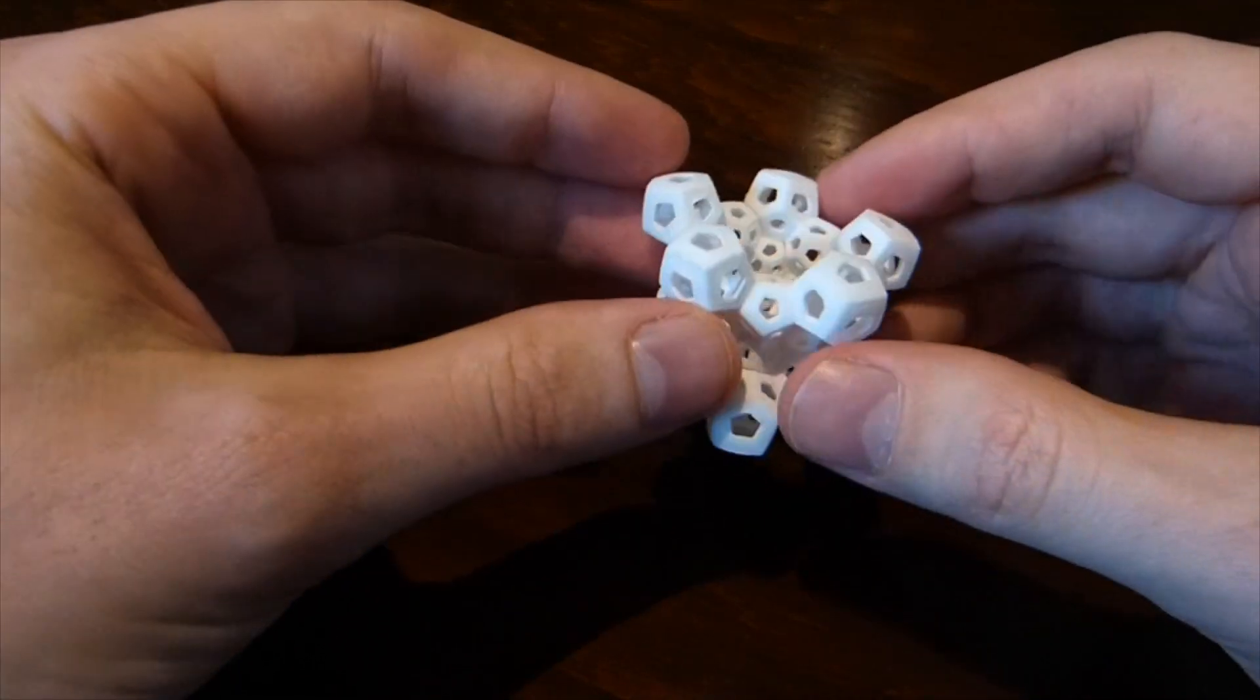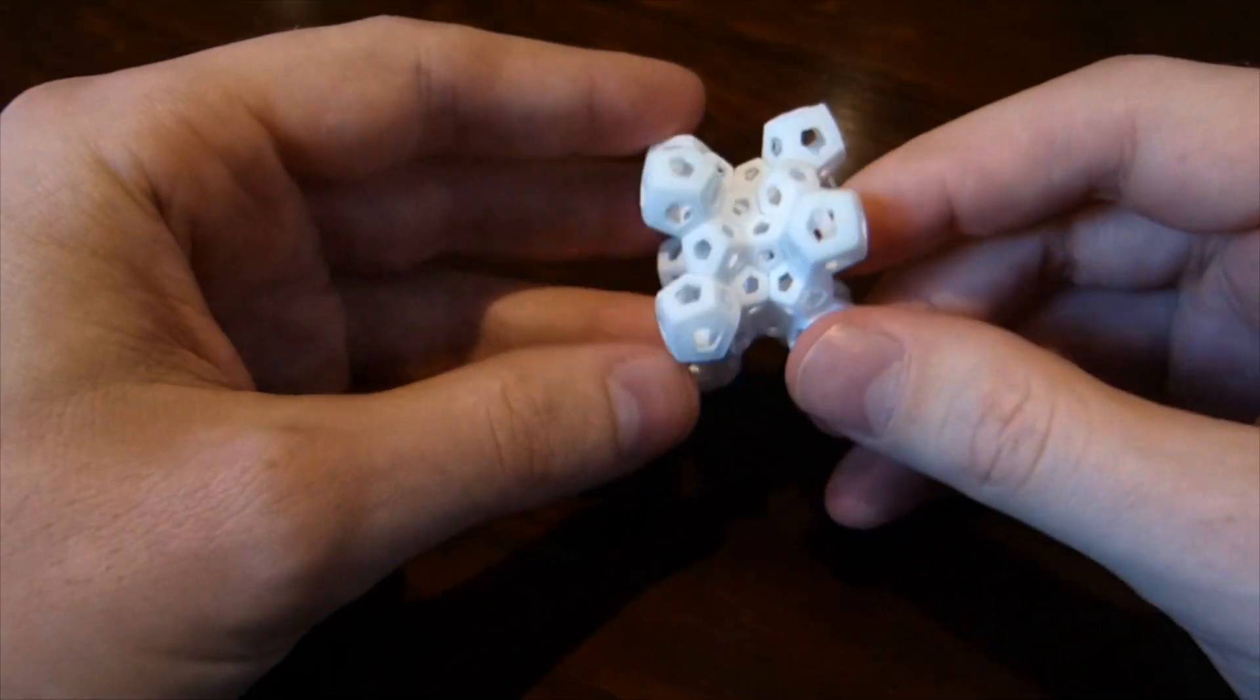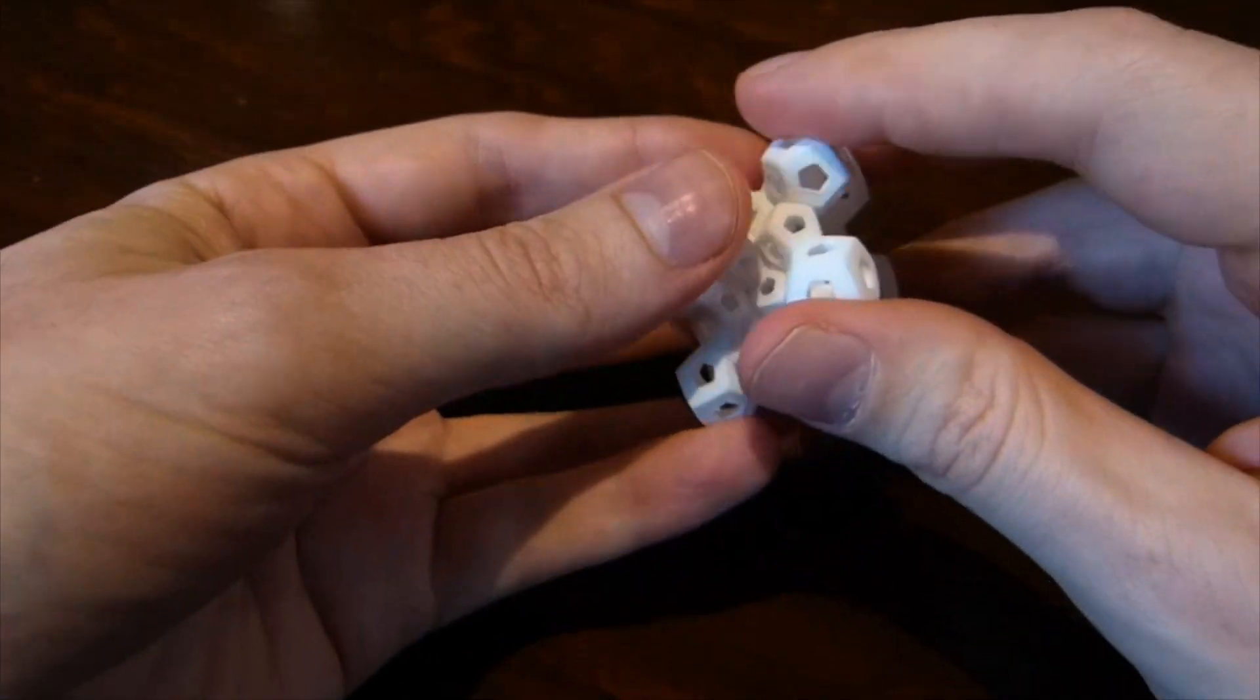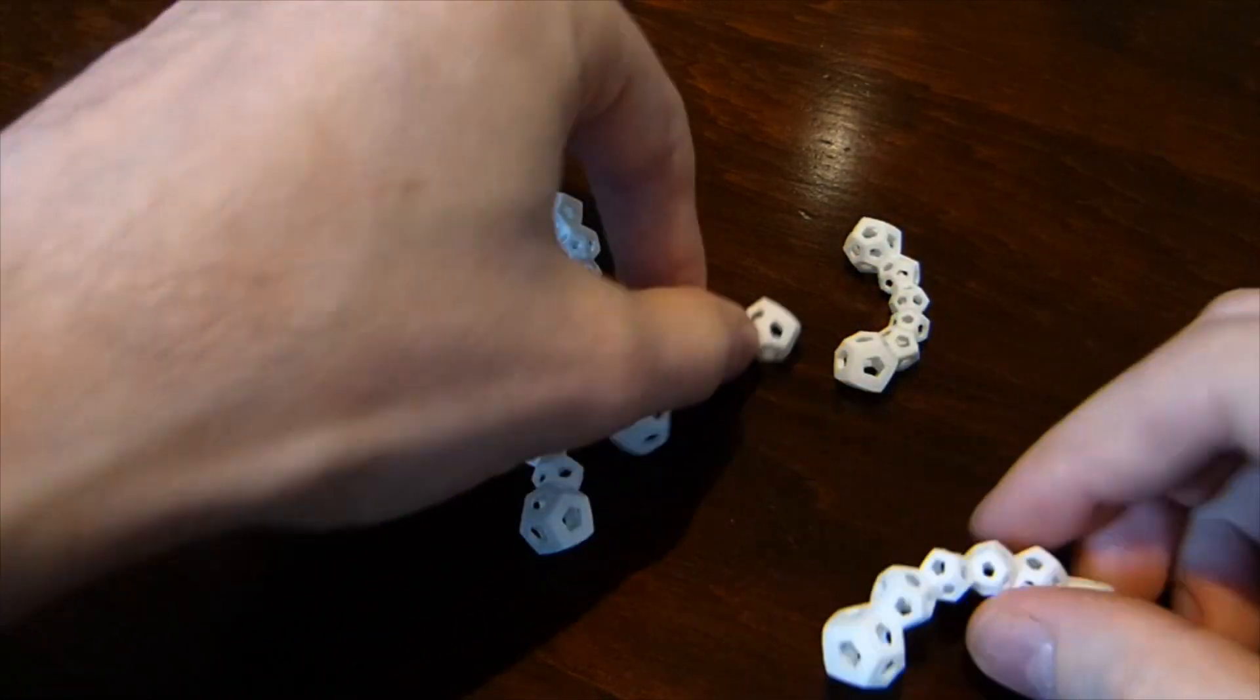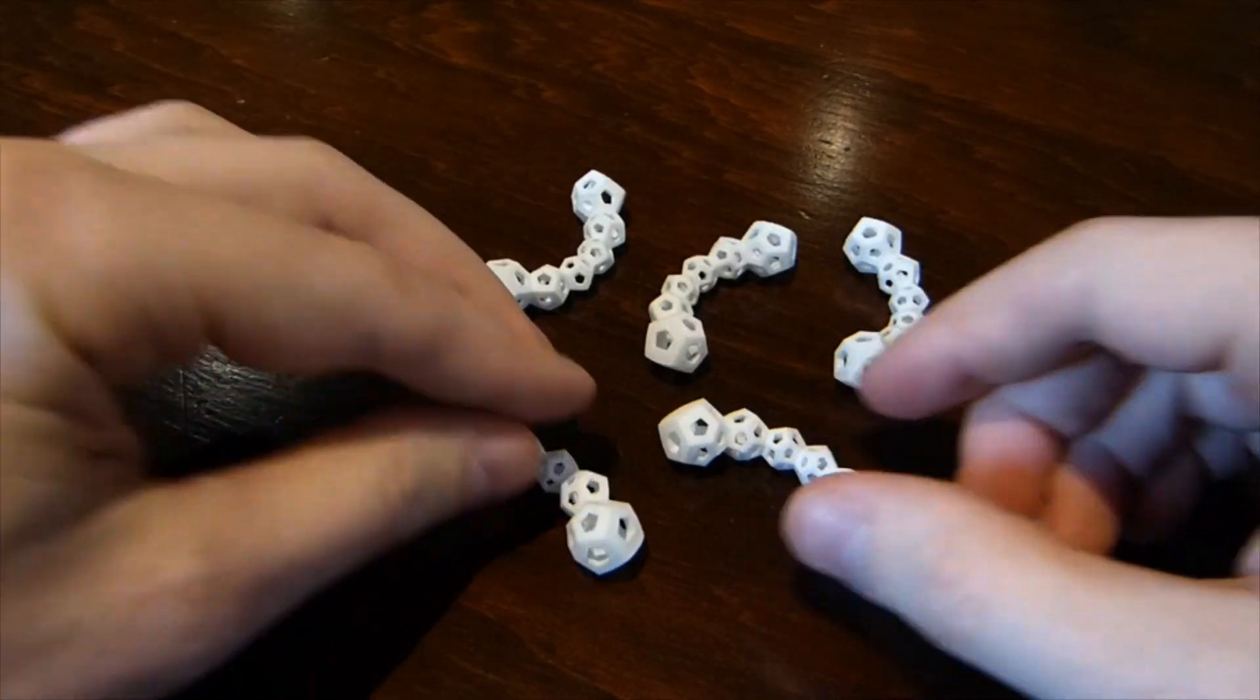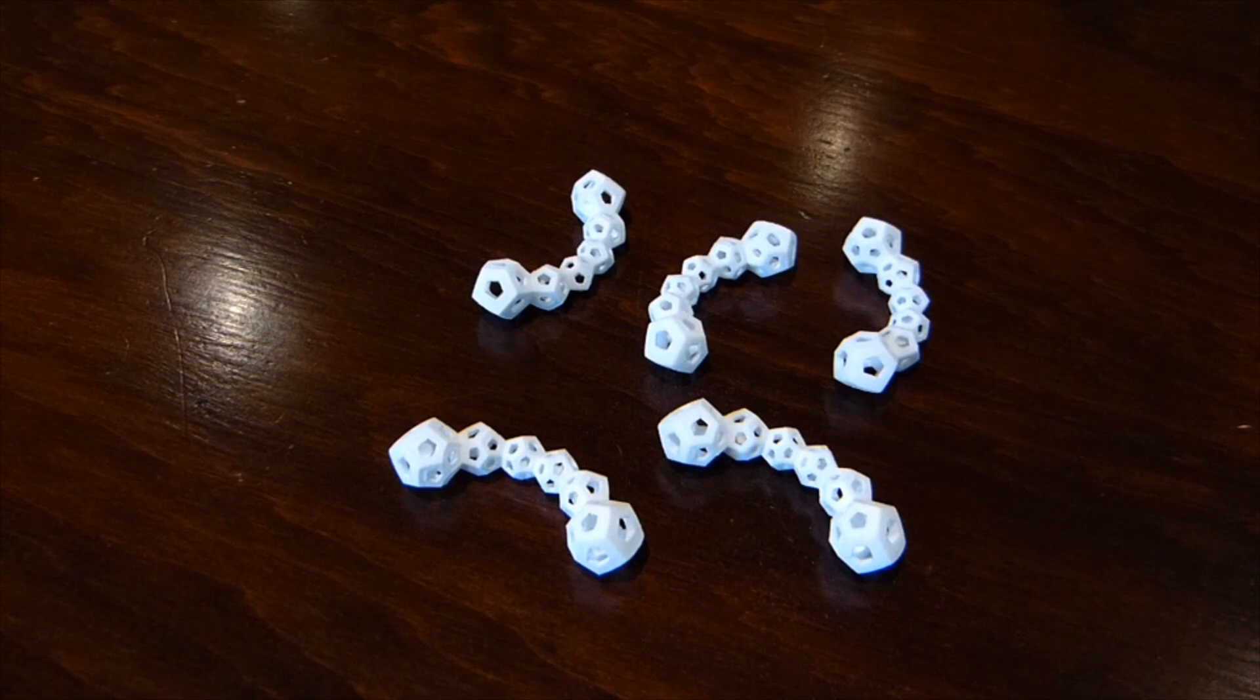And so here's the solution to the reverse problem of turning this into five pieces. So here we go. Not that hard to do. It's quite a bit more difficult to put them back together again. So there you go, the 30-cell puzzle.